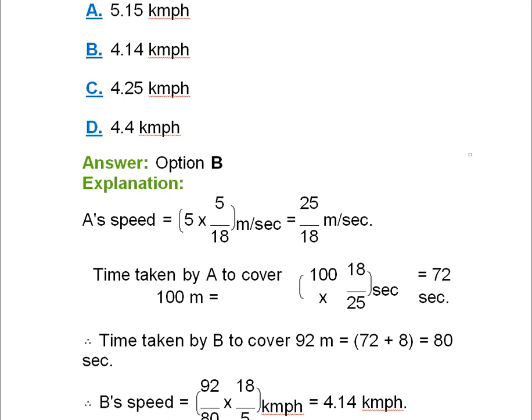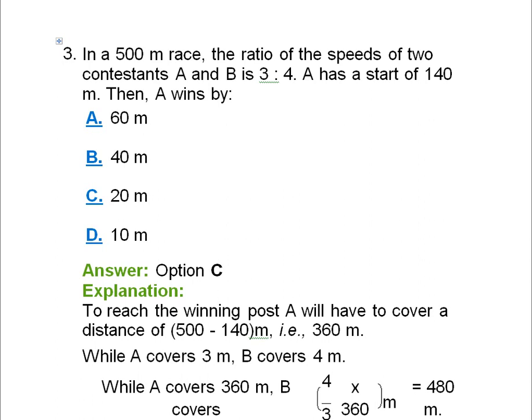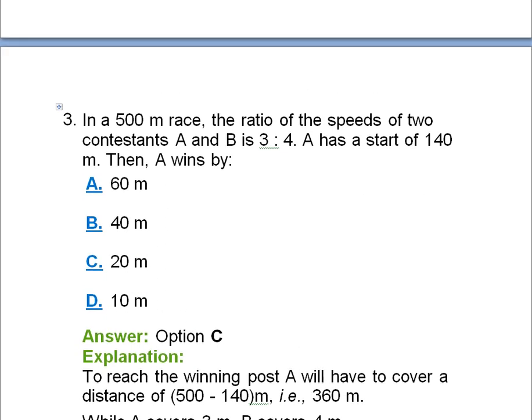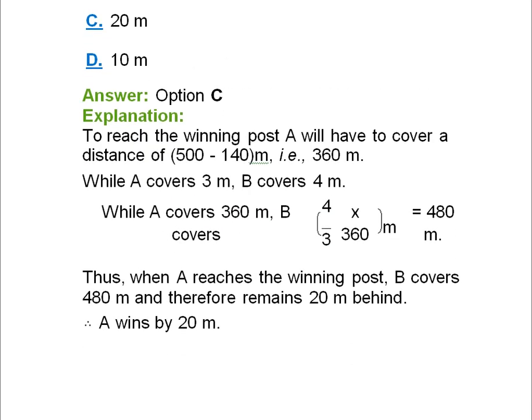Question 3: In a 500-meter race, the ratio of speeds of contestants A and B is 3:4. A has a start of 140 meters. By how much does A win? A needs to cover 500 minus 140, which is 360 meters. While A covers 3 meters, B covers 4 meters — so while A covers 360 meters, B covers (4/3) × 360, which is 480 meters. When A reaches the winning post, B has covered 480 meters, leaving 20 meters remaining. So A wins by 20 meters — option C.